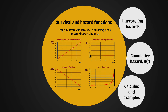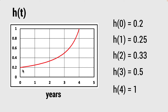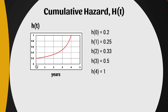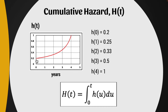It's time to meet the final of our five functions — the cumulative hazard function. Here is our hazard function going from zero to four; I've cut it off at four because it gets hard to read beyond that. The hazard at zero is 0.2, 0.25 after one year, approximately 0.33 after two years, 0.5 at three years, and one at four years. The cumulative hazard is the area underneath this curve from zero up to a particular point — represented in calculus terms as the integral from zero to T of the hazard function. It's measuring how the risk of death has accumulated as time continues.